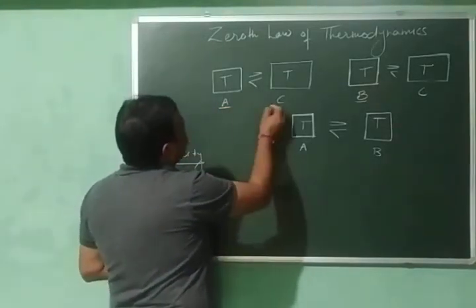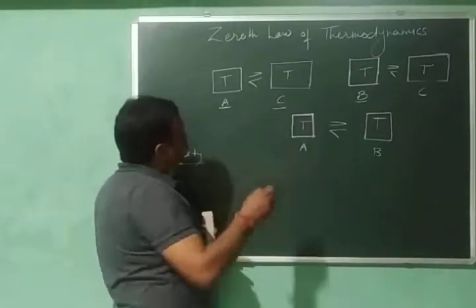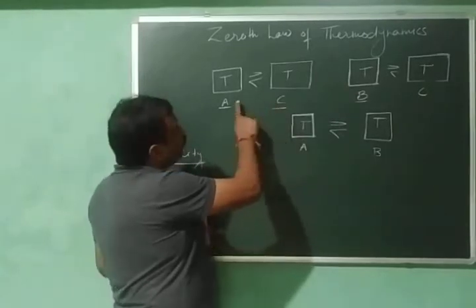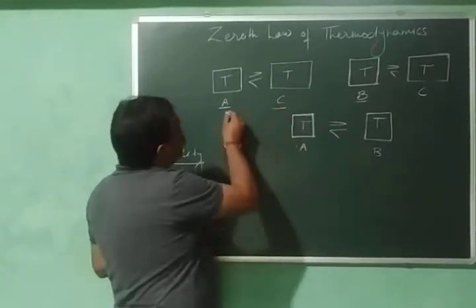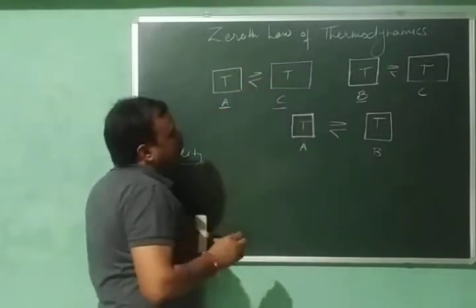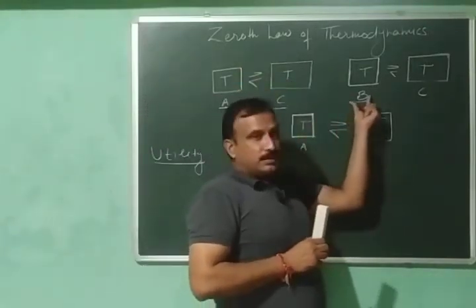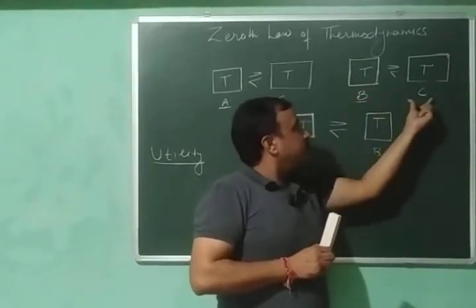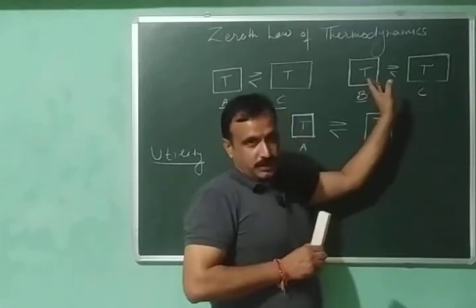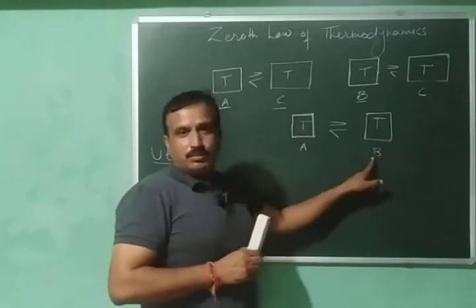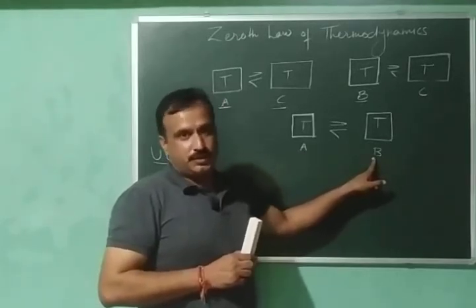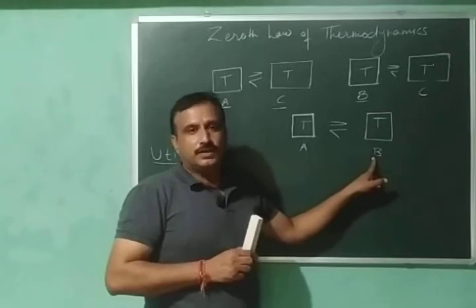Here we have two bodies A and C. Body A is in thermal equilibrium with C, meaning both are at the same temperature T. Another body B is also in thermal equilibrium with body C, meaning both are having the same temperature. Then A and B will also be in thermal equilibrium with each other and will have the same temperature. This is the 0th law of thermodynamics — a very simple law.